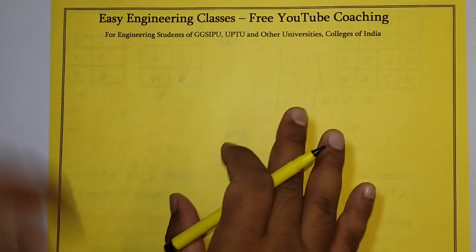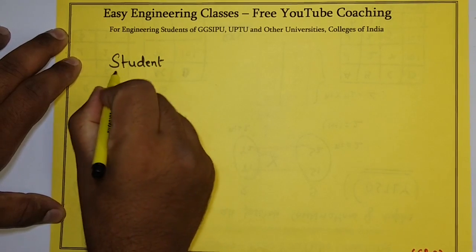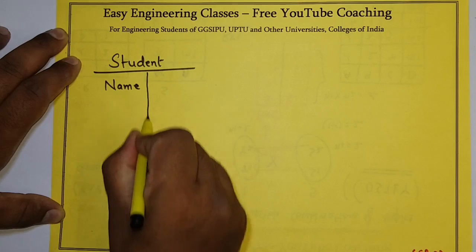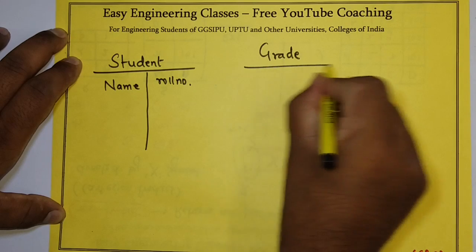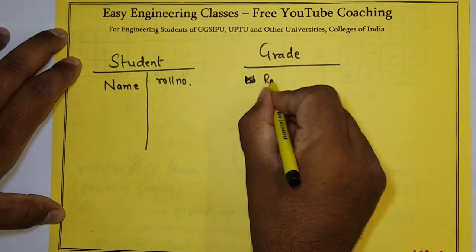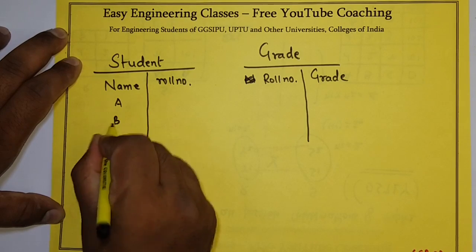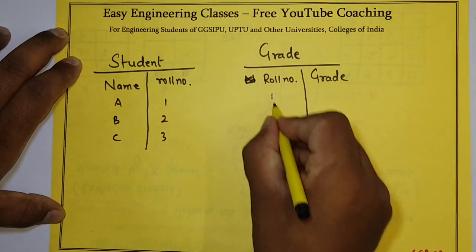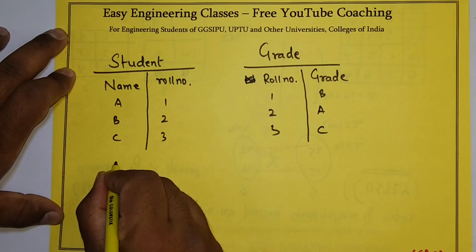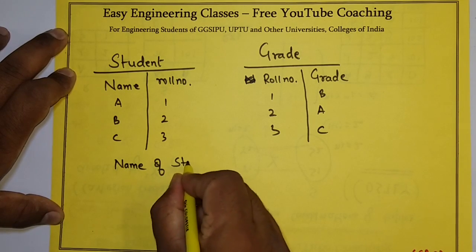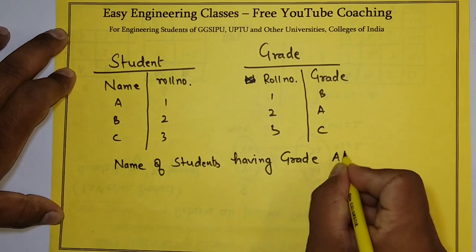Let's see one more example of cross product and where it can be used. Suppose I have a relation called Student with attributes name and row number, and another relation called Grade with attributes row number and grade. Let's enter some dummy data. I have to find the name of students having grade A.